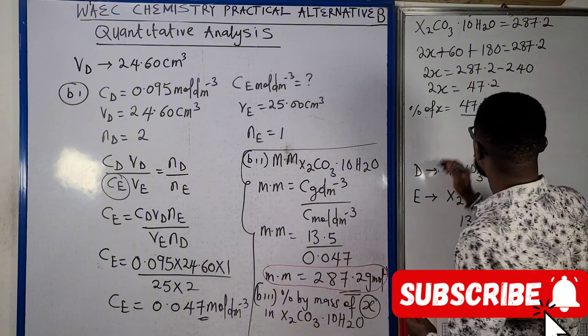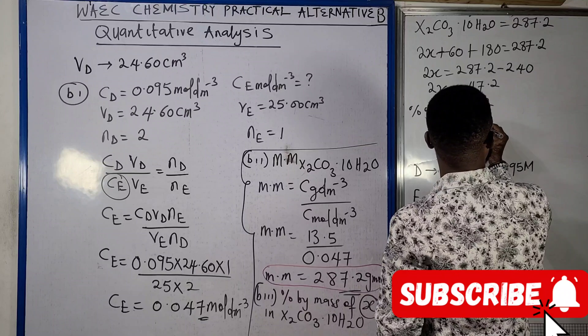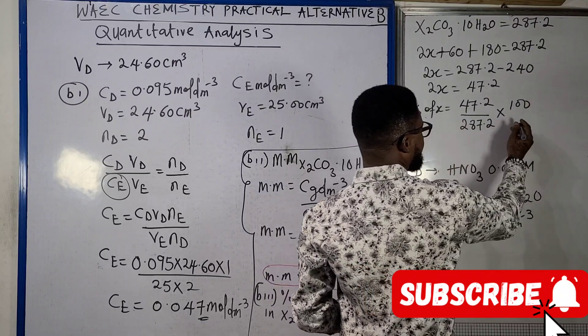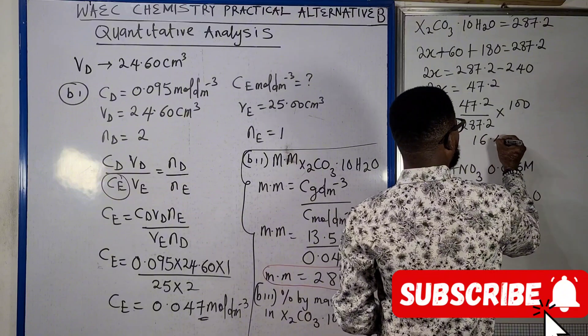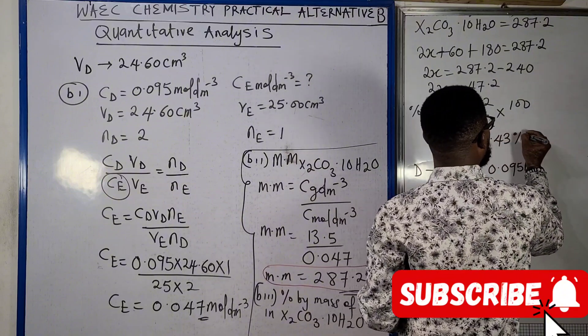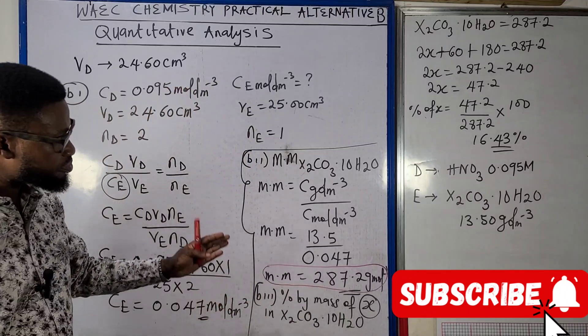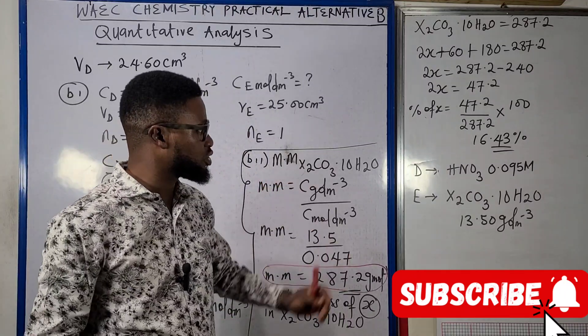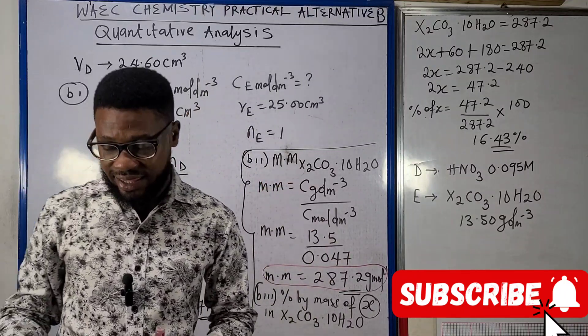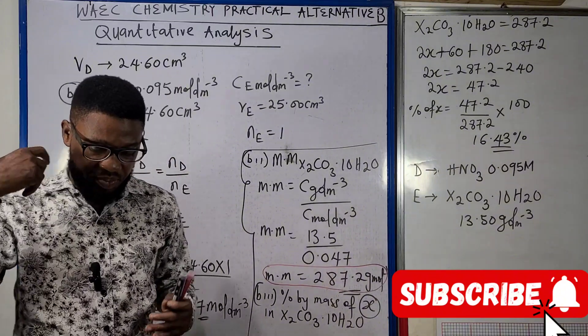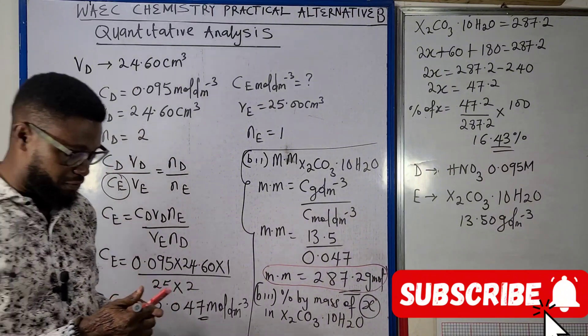So percentage of X by mass of X is 47.2 divided by 287.2 times 100, and in this case you're going to get 16.43%. So that is the percentage by mass of X in X₂CO₃·10H₂O.